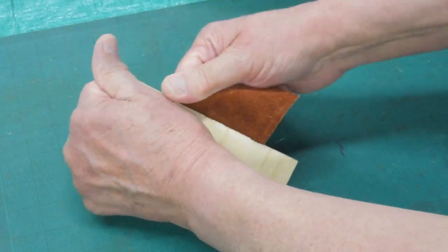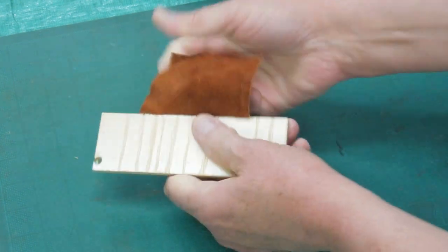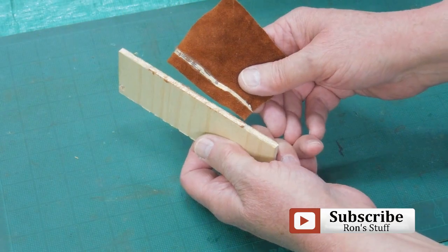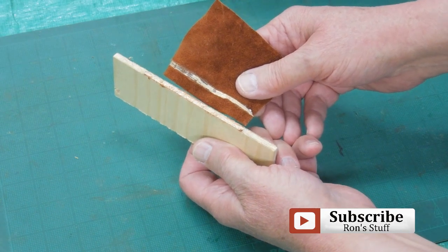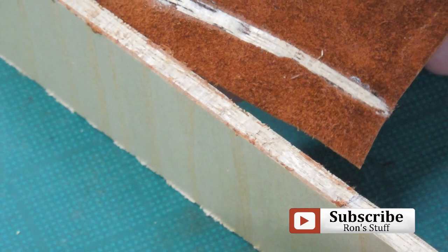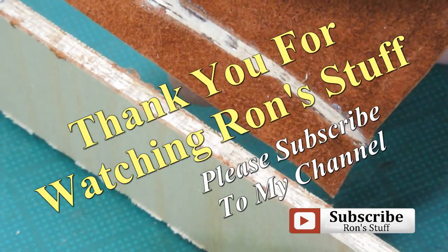If we try to tear it, there. You can see the glue remained attached to the leather and the wood. It just pulled a layer of the wood off. Pretty tough stuff and easy to use.